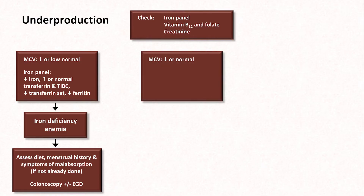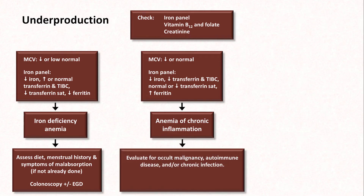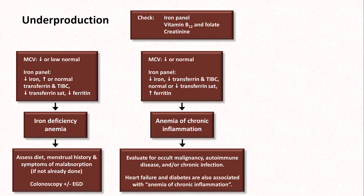If the MCV is low or normal, and an iron panel shows low iron, low transferrin and TIBC, normal or low transferrin SAT, and a high ferritin, that's consistent with anemia of chronic inflammation. The patient should be evaluated for occult malignancy, autoimmune disease, and/or chronic infection. This doesn't necessarily mean a full-body CT scan, PET scan, bone scan, and serum studies for a dozen different autoantibodies — the approach needs to be tailored to the specific patient, and in some cases might just mean a thorough physical exam and increased frequency of clinic follow-ups. Heart failure and diabetes are also associated with this form of anemia.